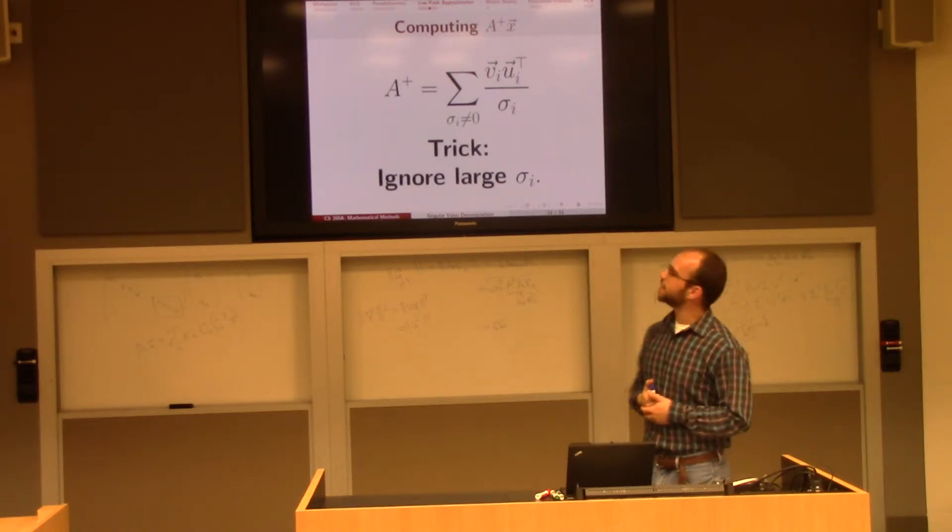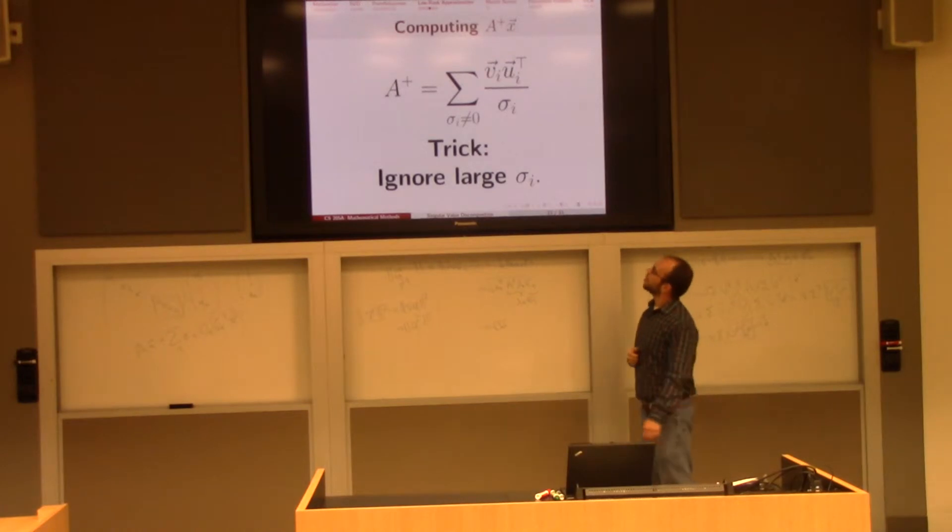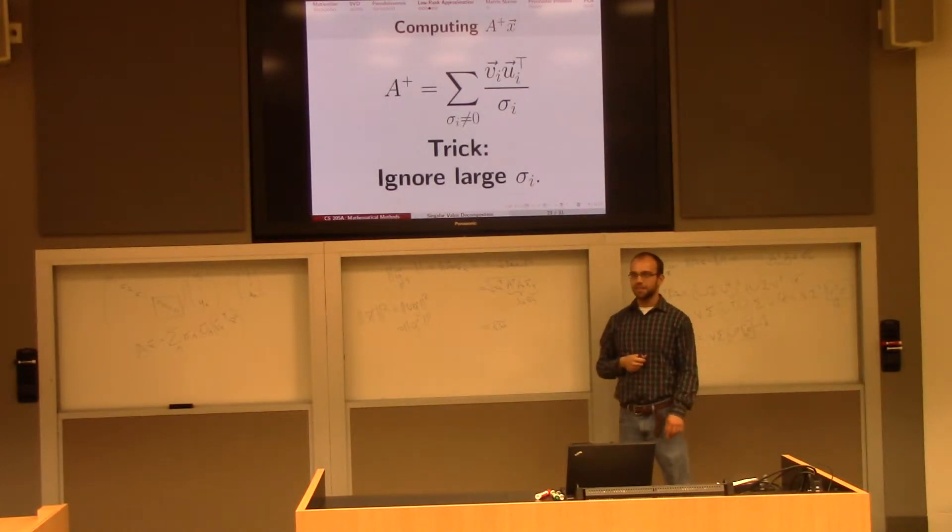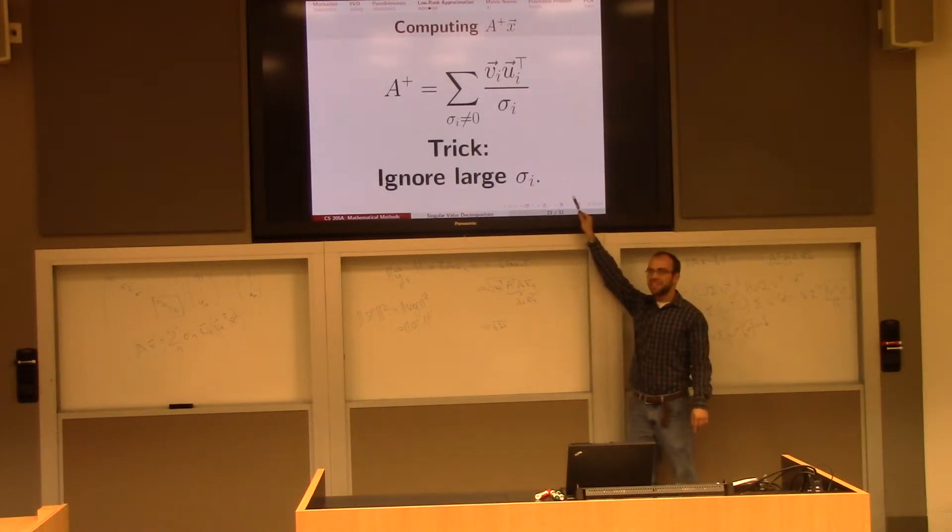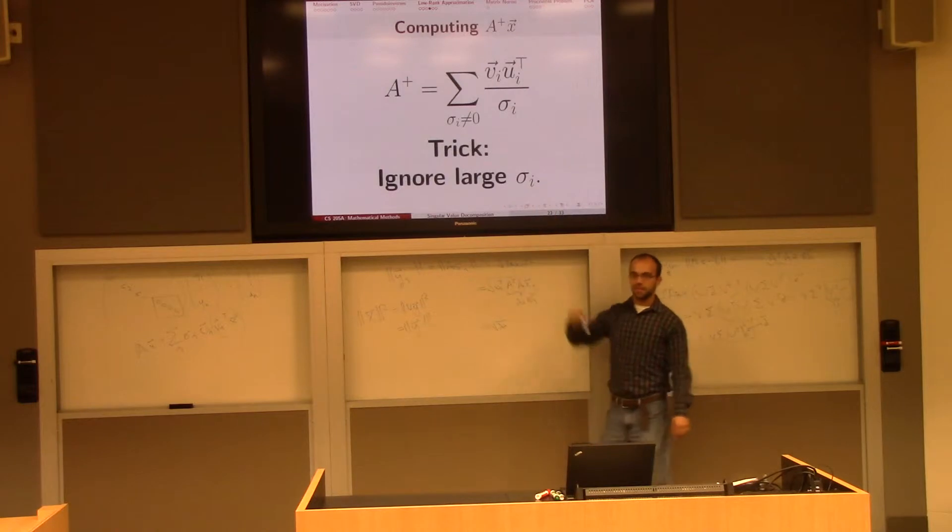But what if I want to find the pseudo-inverse of a times x? Well now, it's the same expression. All the pseudo-inverse does is take those singular values and finds their reciprocal. Well, so now all the small sigma i's became big, all the big sigma i's became small. So now I do the same trick, and I ignore the large singular values when I evaluate a plus times this matrix x. So if I want an approximation of a inverse times x, one way to do this is to evaluate the sum but only for the small sigma i's.